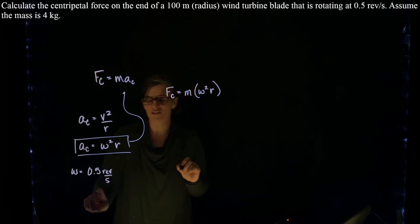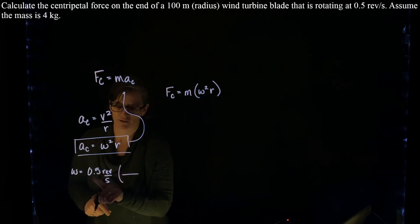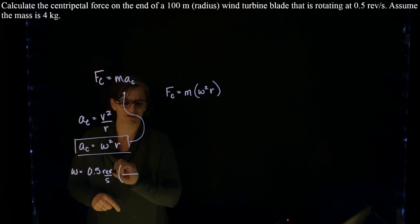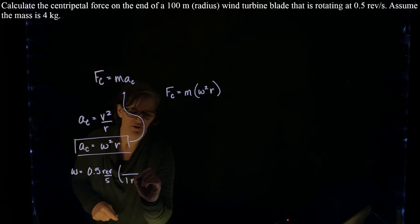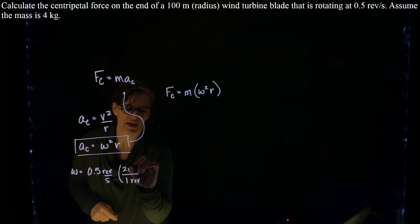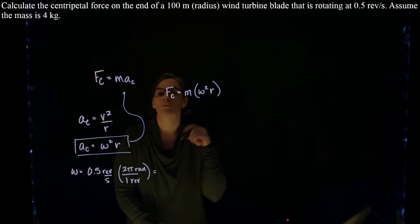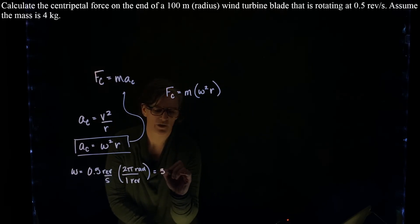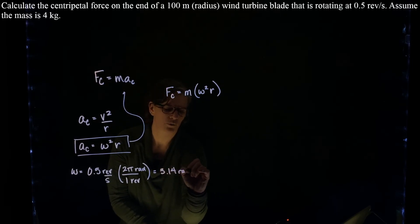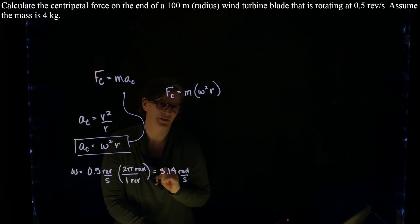So we're first going to convert our angular velocity in revolutions per second to radians per second. We know that for one revolution, we have two pi radians, which gives us a rotational speed of 3.14 radians per second.